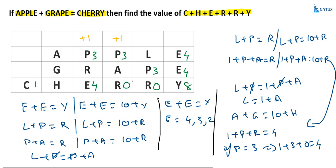Since P equals 3 and there is a carry of 1 here, L plus 3 must equal 10. This happens when L equals 7, because 7 plus 3 equals 10, giving a remainder of 0 and a carry of 1. We already know L and A are consecutive with L equals 1 plus A. So if L equals 7, then A equals 6. Substituting: 1 plus 3 plus 6 equals 10, and 0 is placed here with 1 carried over. Confirming R equals 0 and A equals 6.